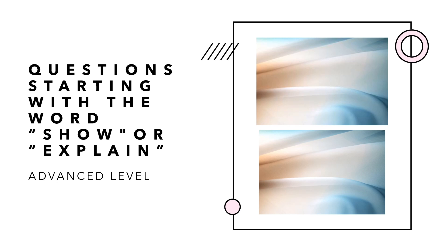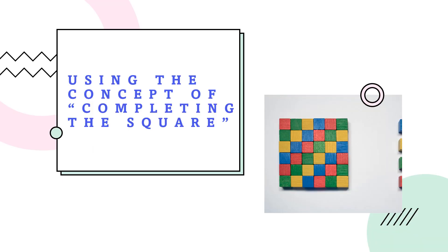In today's video, we are going to work on some questions that start with the word 'show' or 'explain'. For this kind of question, there are basically two methods you can apply. The first method is using the concepts of completing the square. The second method is to use the discriminant, which is the value for b squared minus 4ac. We should focus on using the concepts of completing the square first.